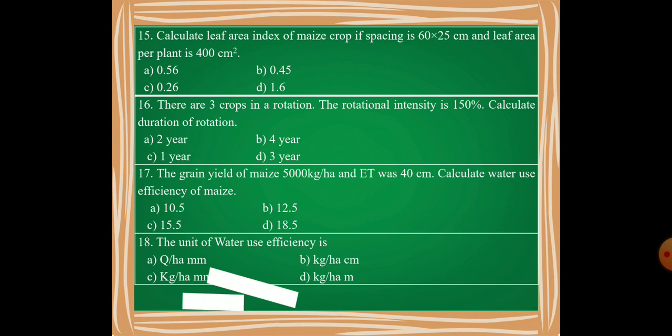Your options are 0.56, 0.45, 0.26, and 1.6. Then moving on, question number 16: There are three crops in a rotation, the rotational intensity is 150%. Calculate the duration of the rotation. Your options are 2 years, 4 years, 1 year, and 3 years.